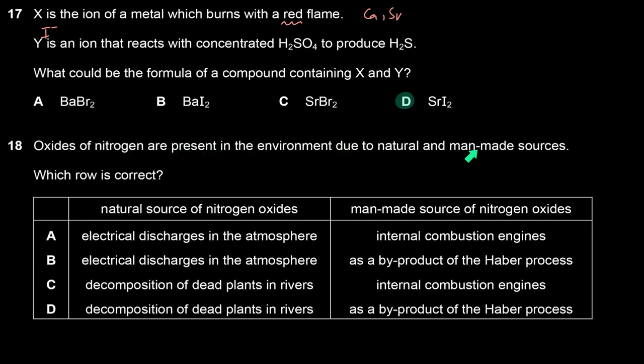Oxides of nitrogen are present in the environment due to natural and man-made sources. The natural source is lightning — electrical discharge in the atmosphere provides enough energy to break the N≡N triple bond, causing nitrogen to react with oxygen. The man-made source is internal combustion engines, which provide high enough heat for the same reaction. The answer is the row showing lightning and internal combustion engines.